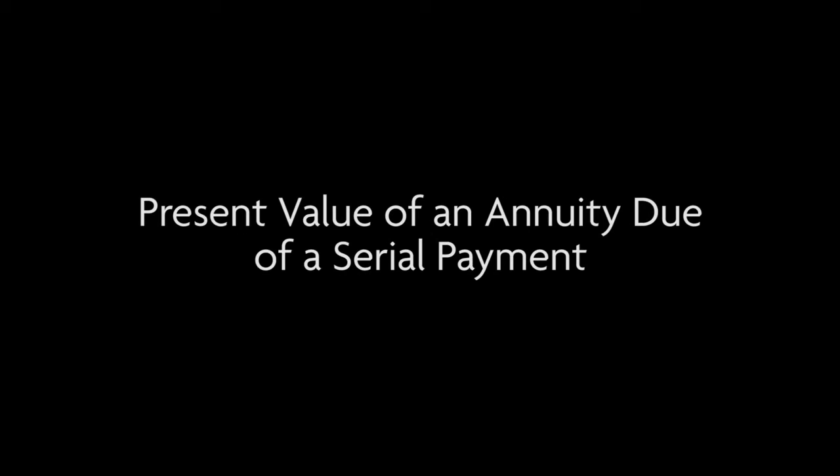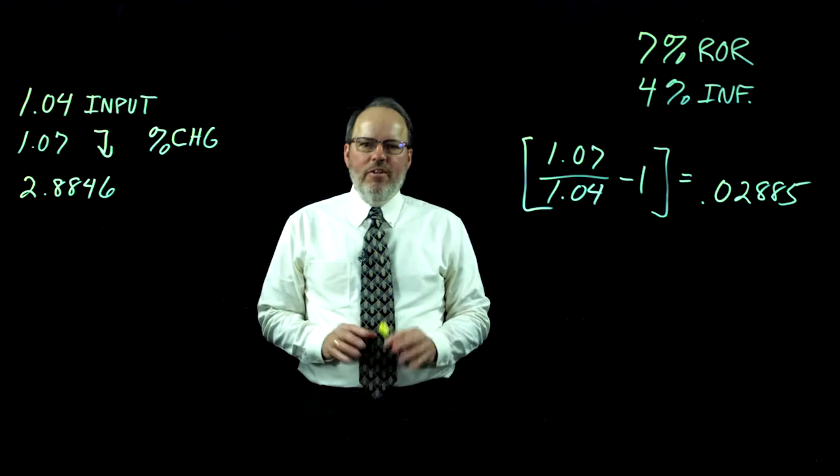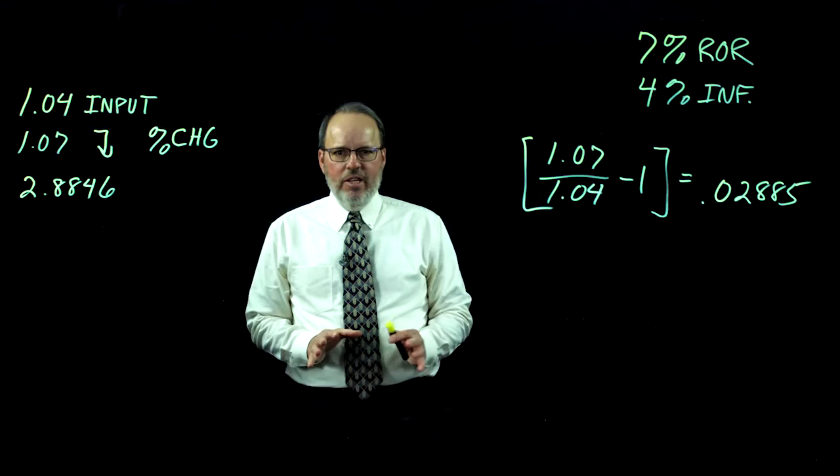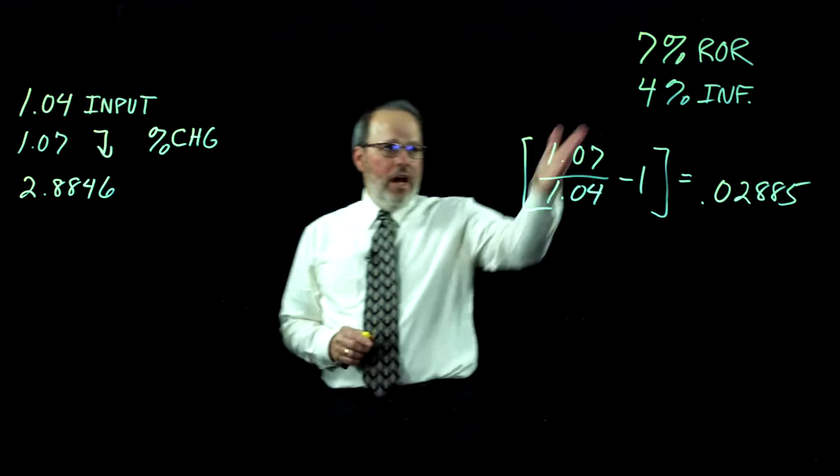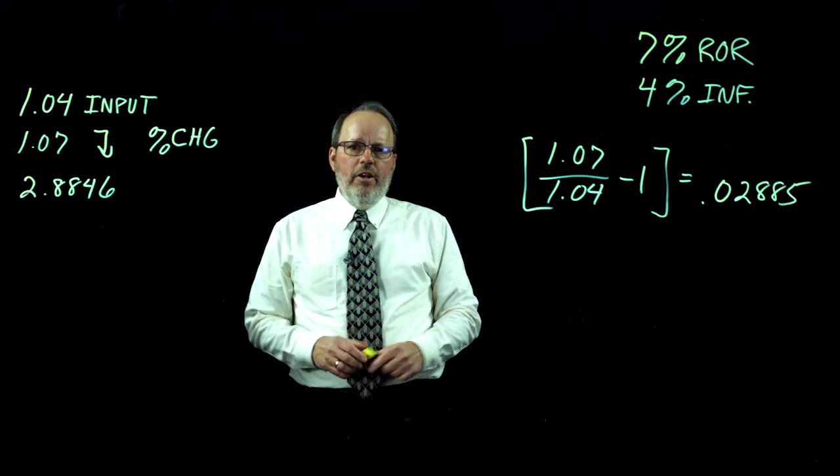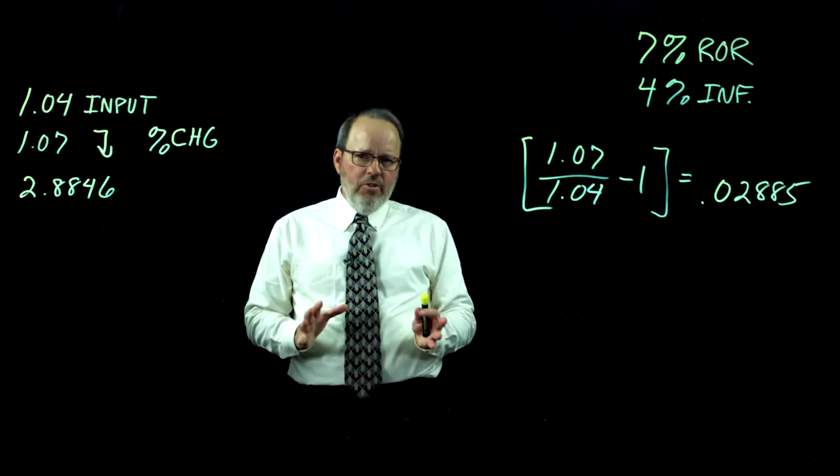Now we're going to do a present value of an annuity due calculation, but first let's do an inflation-adjusted return. When you have an inflation rate, you don't just take the difference between the rate of return and the inflation rate. For example, using a 7% rate of return and a 4% inflation rate, I don't just use 3% as my inflation-adjusted return, because that doesn't account for the effects of compounding on the inflation rate.